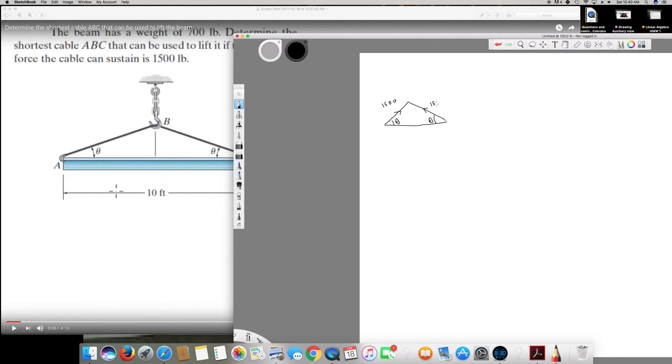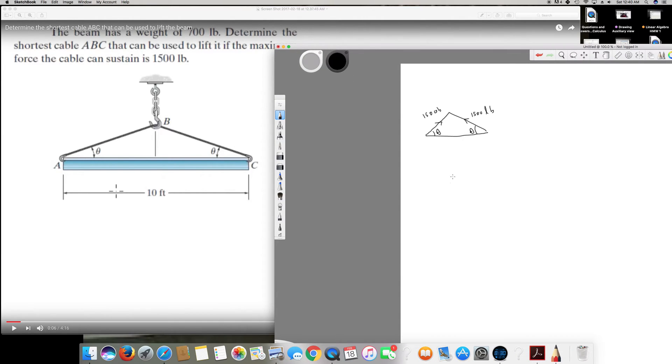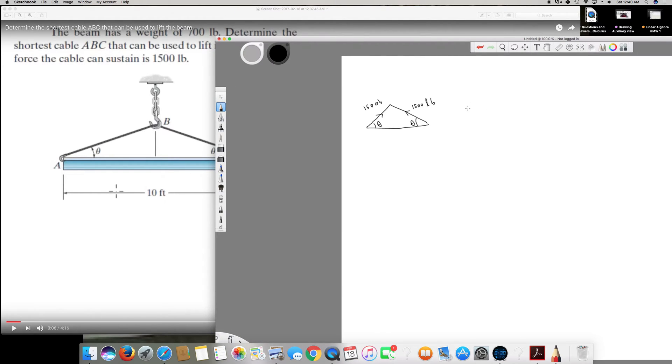And also they are saying 700 lb is acting downwards, that's the weight. Let's see how we can form the equation. We only have to consider the y direction to find a solution.